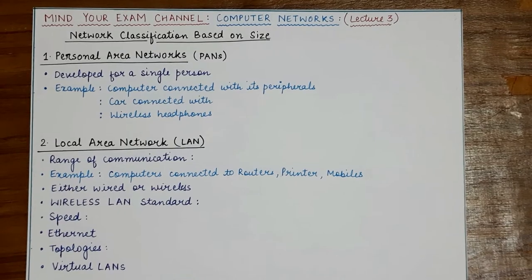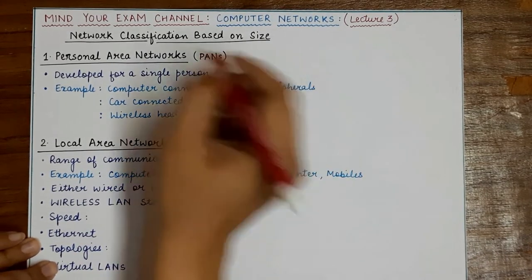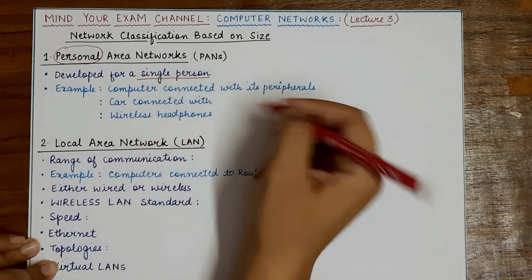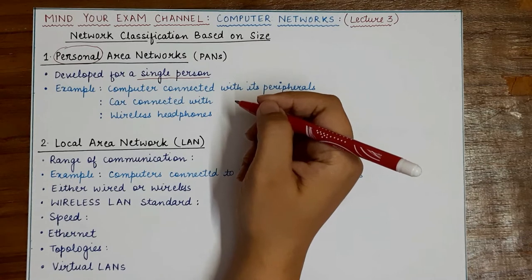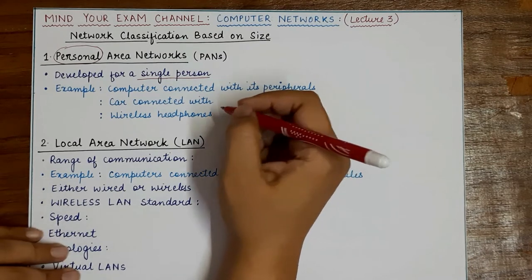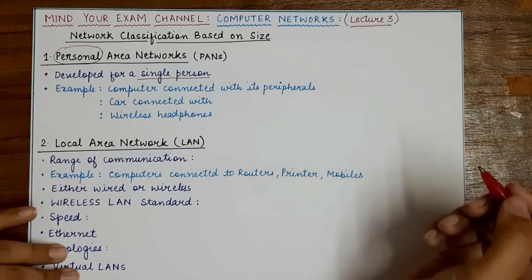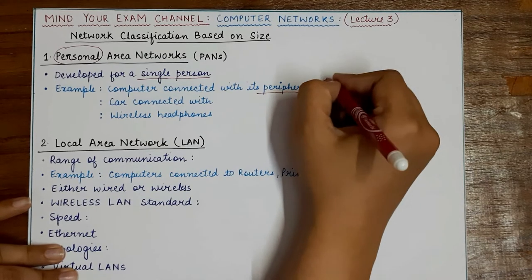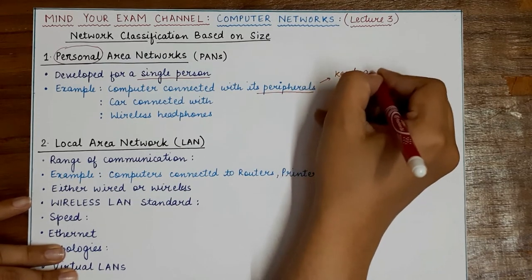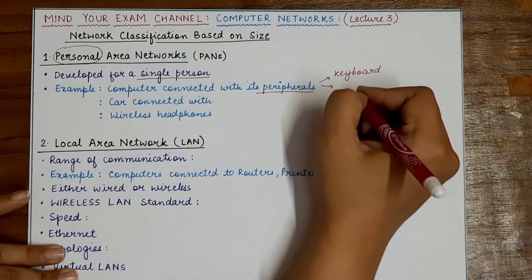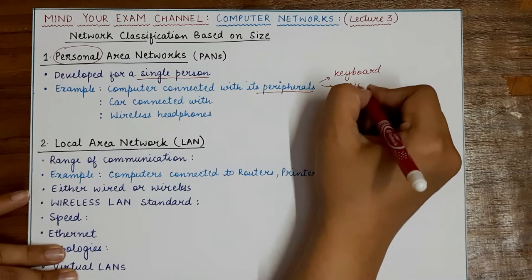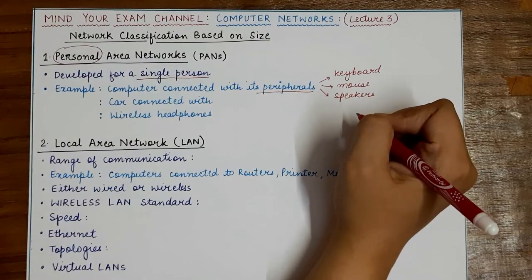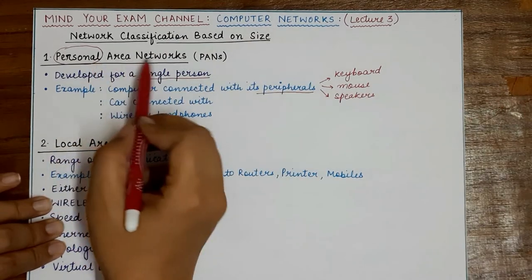Starting with the Personal Area Network — as the name suggests, 'personal' means for a single person. This is a network developed for the benefit of a single person. A common example is when you have a computer and connect it wirelessly or through wired cables to its peripherals such as a keyboard, mouse, or speakers. That forms a small network for a single person — a Personal Area Network.